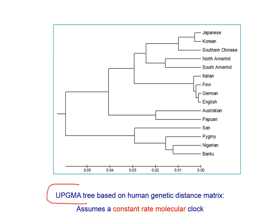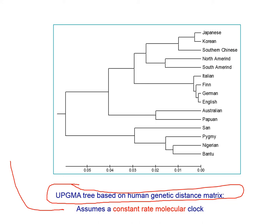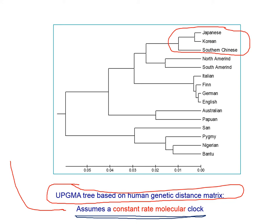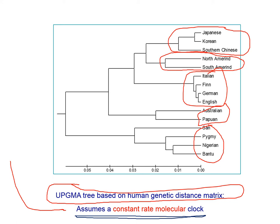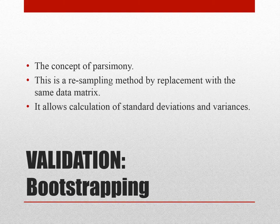When you construct a UPGMA tree, you can see the Asian clade, the Japanese, Korean, and Southern Chinese group, the North and South Americans, the Europeans, the Oceanic clade — Australia and Papua New Guinea — and the African cluster. You can see a clear distribution between these species, assuming a constant-rate molecular clock. This implies that the gene is ideal for differentiating between these different subspecies.